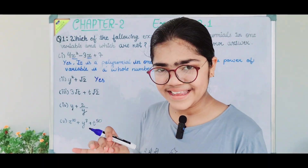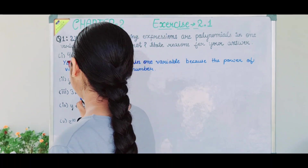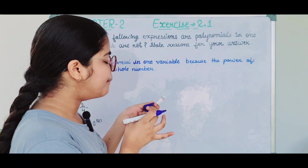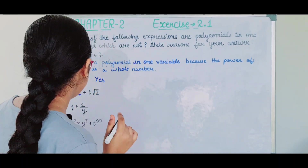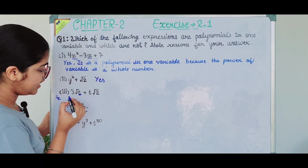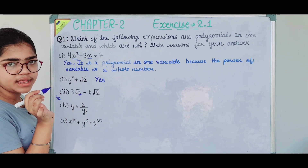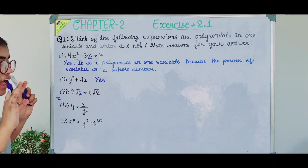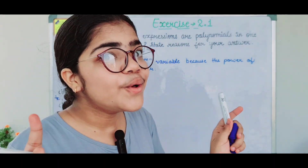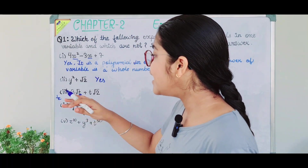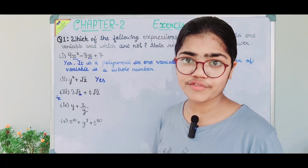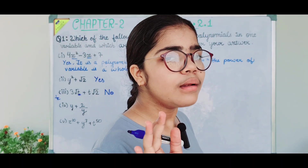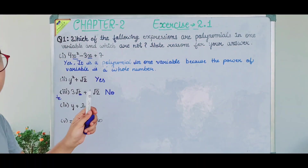The third part is 3√t + t√2. Now what is the variable? t. Root means the power is 1/2. Why is 1/2 not a whole number? It is not. So this is not a polynomial because the power of the variable is not a whole number.